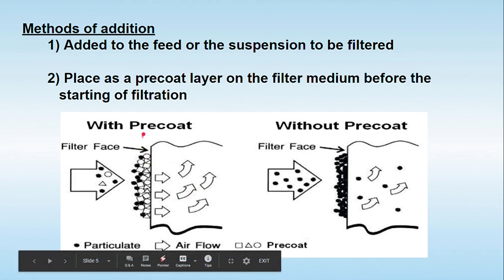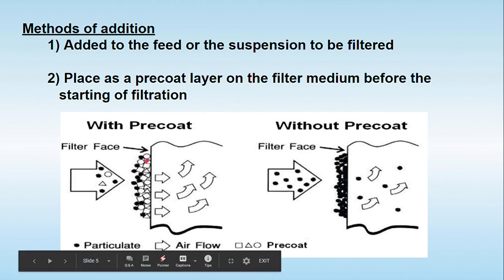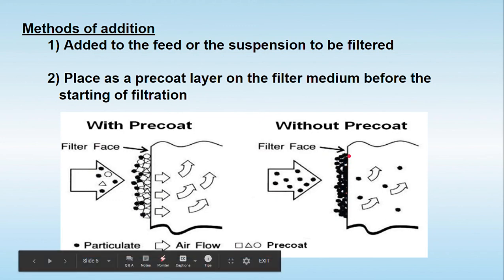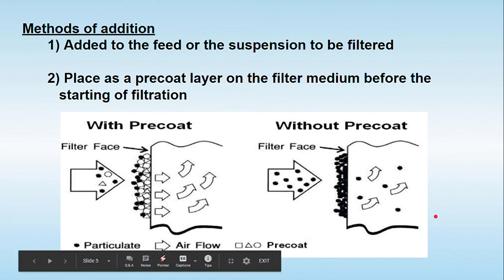Looking at the diagram, the pre-coat is represented by circles, triangles, and squares — these are the pre-coat particles. On the other side, where there is no pre-coat, the black particles representing insoluble solids come directly into contact with the filter medium. With the pre-coat, the insoluble solids are retained on top and do not contact the filter medium, preventing its blockage. Without pre-coating, the solids contact the filter medium and may block it, and if more pressure is applied, they may even pass through.